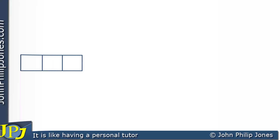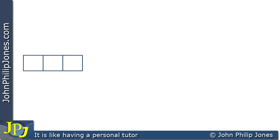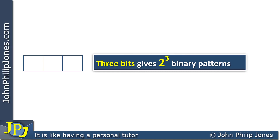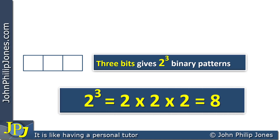If we continue to when we have three flip-flops — in other words three bits — and we want to know how many possible binary patterns can be placed in there, how many different combinations are possible, then we take three bits to give two to the three binary patterns. Two to the three is two times two times two, which is clearly eight. So three bits gives us eight possible combinations.